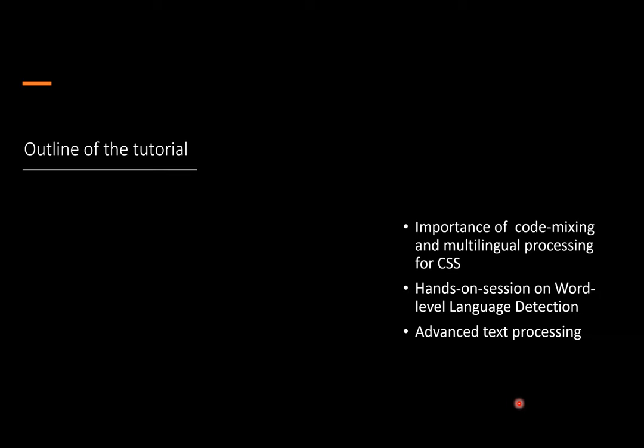What we are going to do in this tutorial: I'll start with a little bit of introduction about why processing code mixing is so important for computational social science. Then we will do a hands-on session on a particular task, which is word-level language detection, which is a very important first step for any kind of code-mix processing. And then of course there are advanced text processing methods, which we won't have time to cover in full, but I'll nevertheless talk about those a little bit.